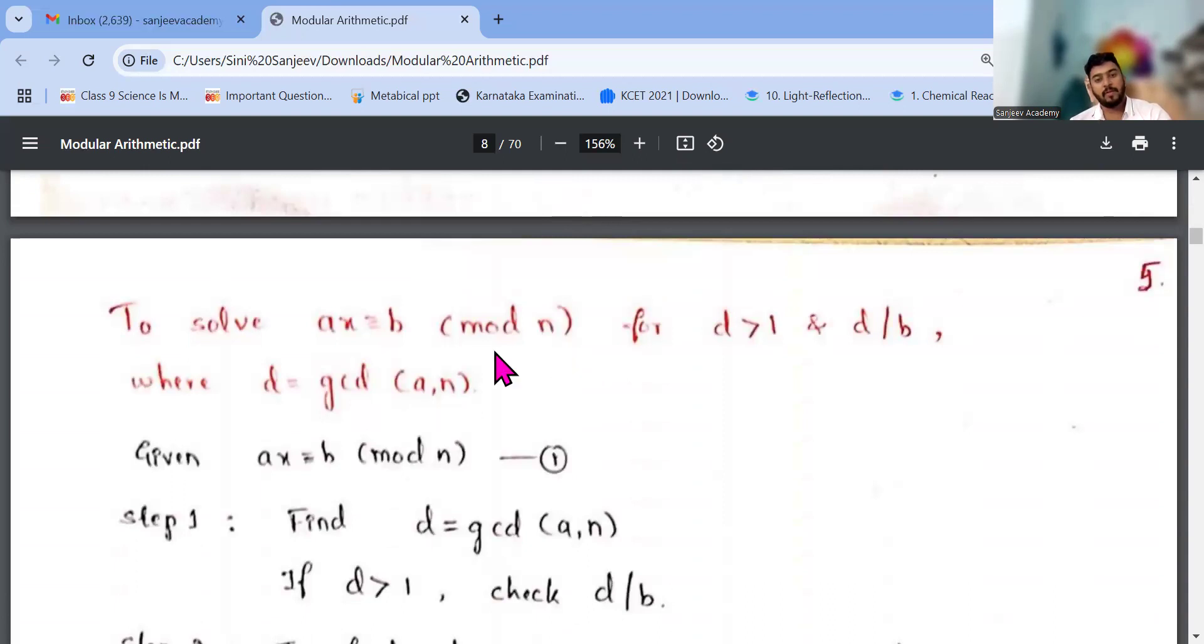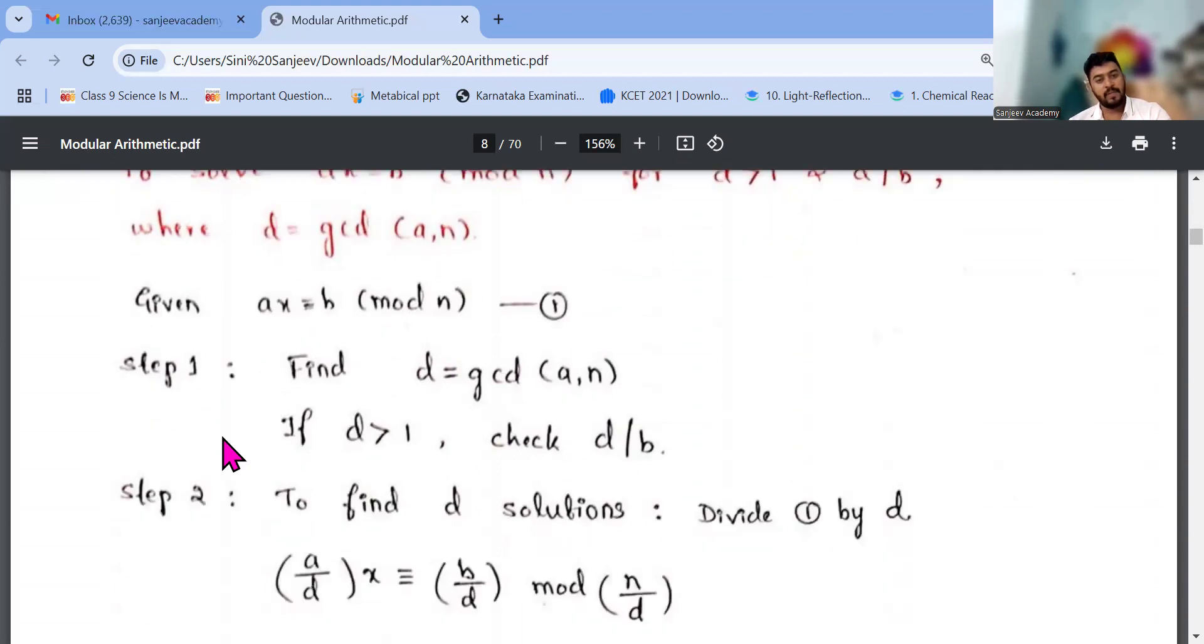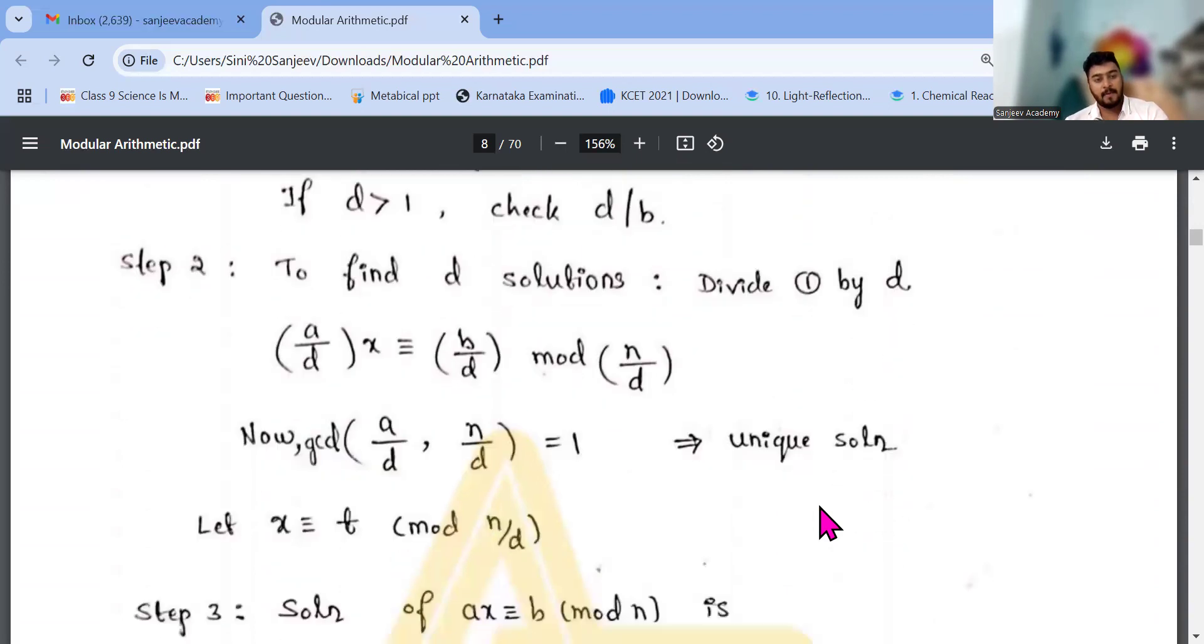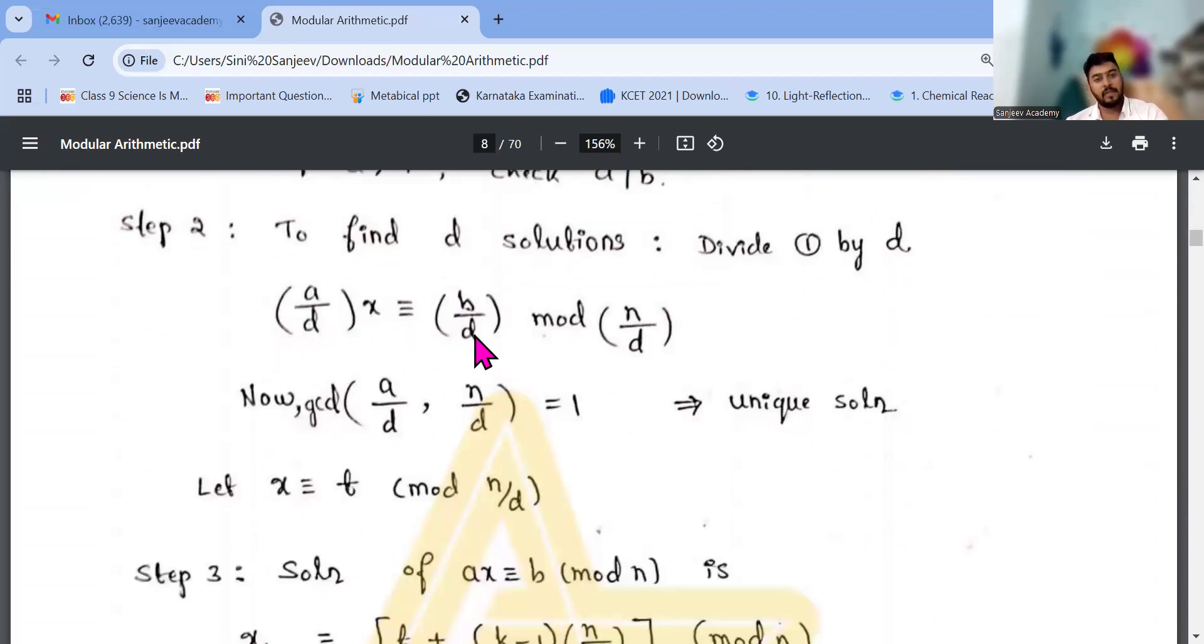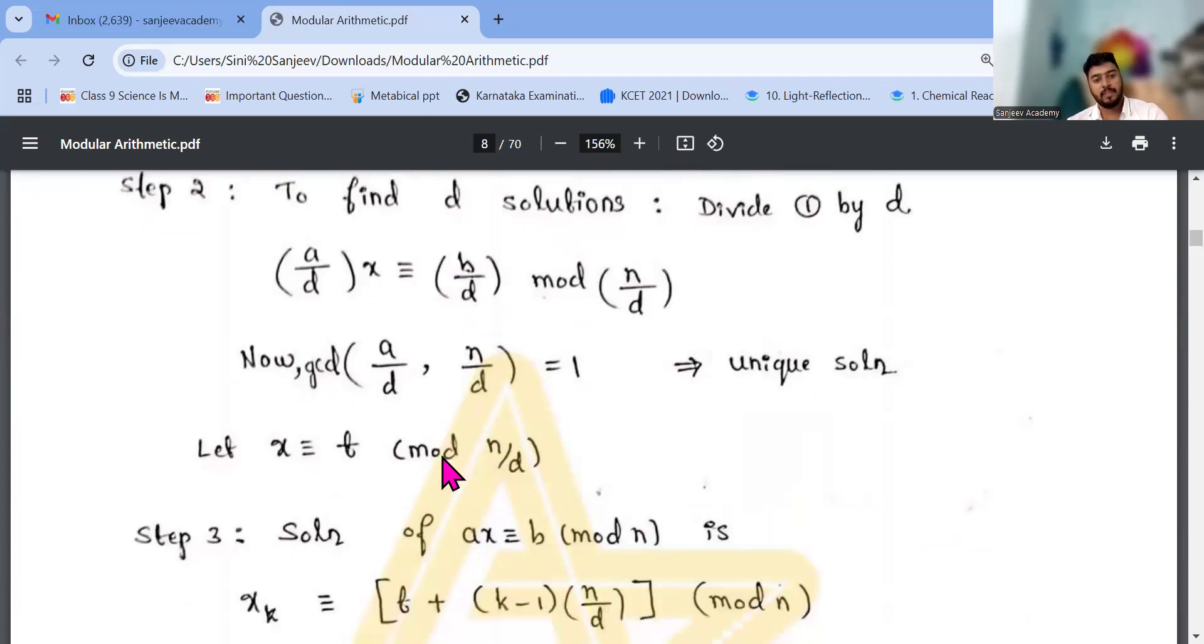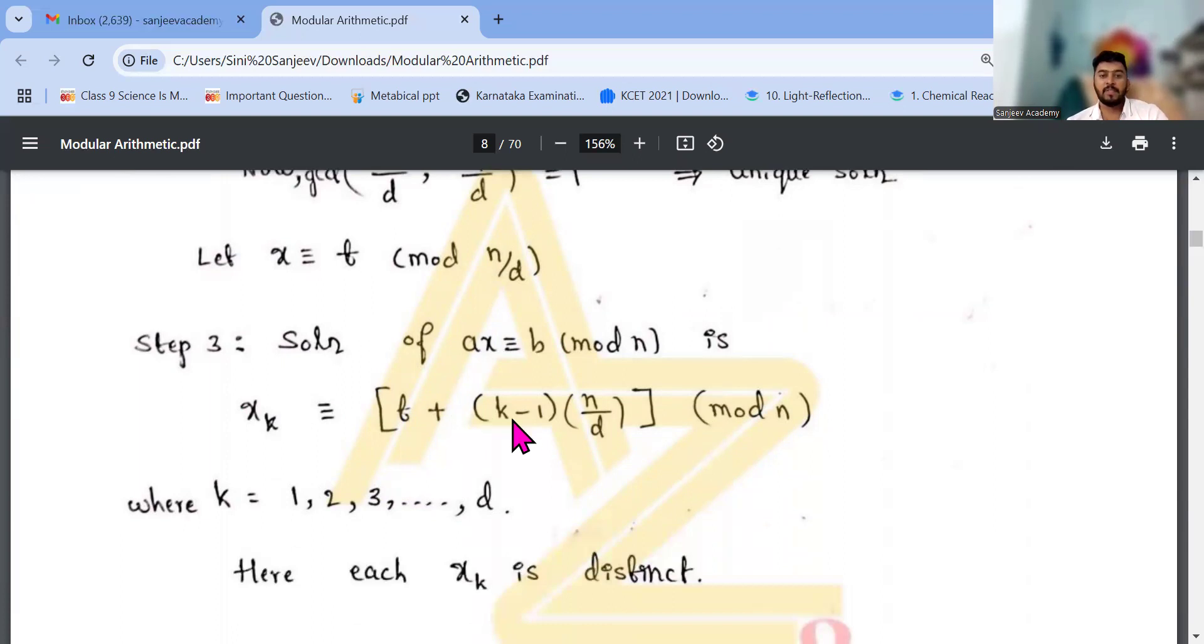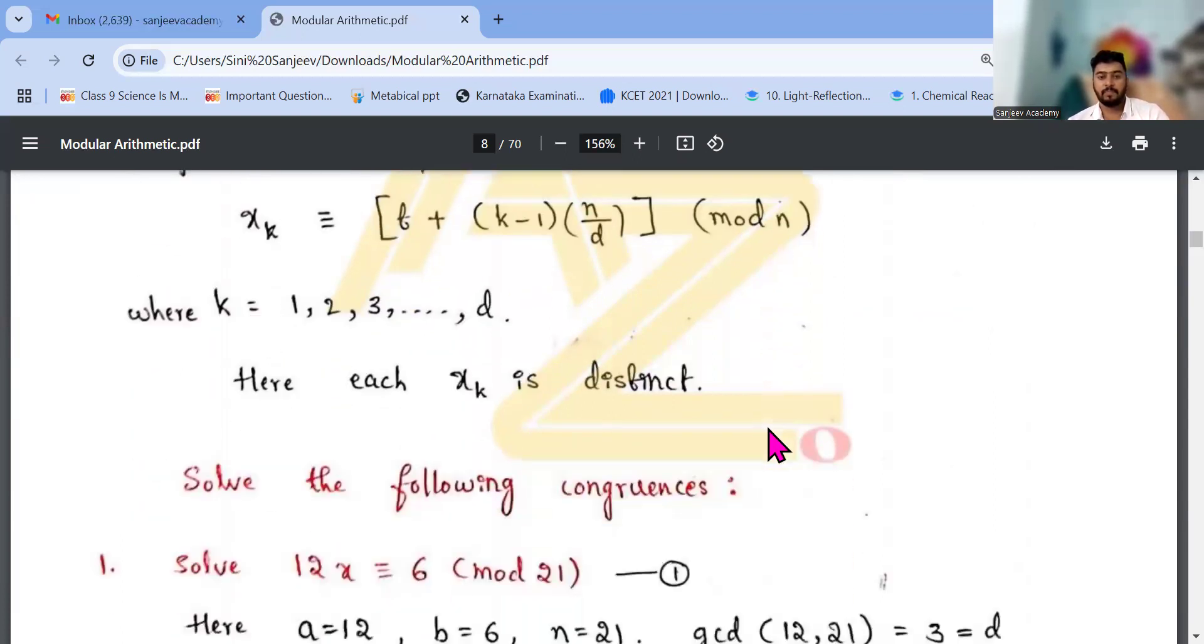Now to solve ax congruent to b mod n, where d equals gcd a, n. First find d equals gcd a, n. And if d greater than 1, check d divides b to find solution. Divide equation by d. That is a by d times x equals b by d mod n by d. Now gcd a by d, n by d equals 1, unique solution. Then let x congruent to t mod n by d. Solution of ax congruent to b mod n is x equals t plus k times n by d mod n.